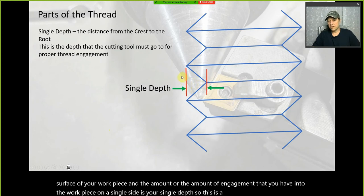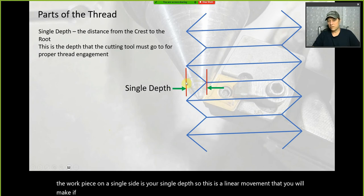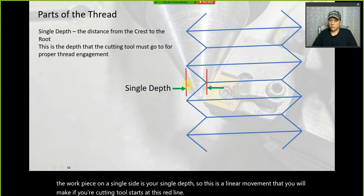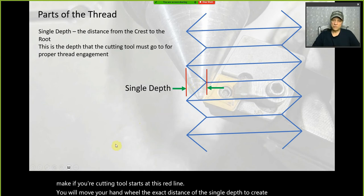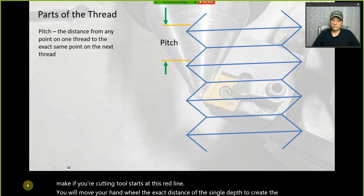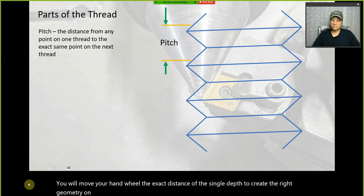If your cutting tool starts at the reference line, you will move your hand wheel the exact distance of the single depth to create the right geometry on your thread.